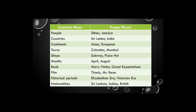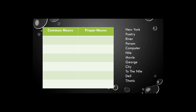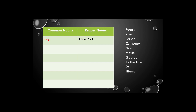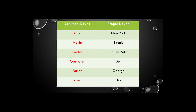Hope you understood the lesson. Let's check your knowledge with a small activity. You can see a set of nouns — there are both common nouns and proper nouns. What you have to do is match each proper noun with its corresponding common noun. Here's an example: New York is a name of a city, so New York is a proper noun and city is a common noun. Now pause the video and fill in the table.